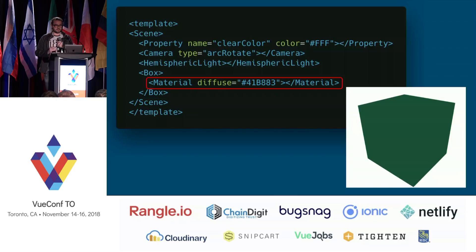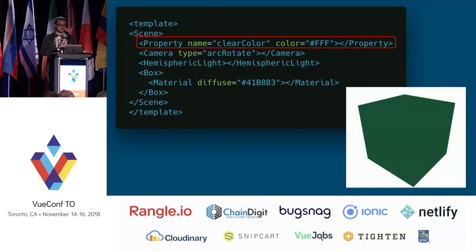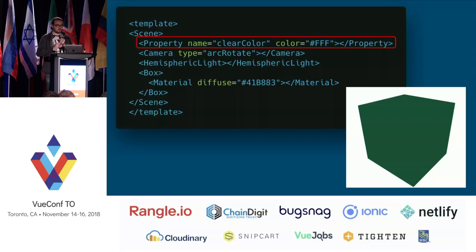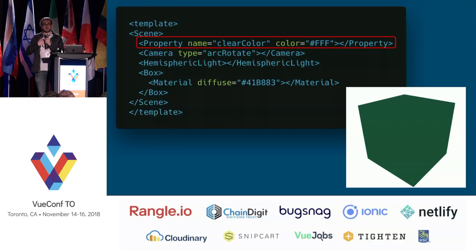The great thing about this library is you can just pass in color codes, and it looks a lot like you're working with HTML or CSS. And this part — which you don't have to worry about too much — is actually part of the property system. We're setting a property on the scene called clear color, which just tells it we want a white background. The property system is really important as you get more into the library, because it lets you change things I haven't necessarily accounted for in the plugin. So if you want to change something underneath the hood, you can use a property.